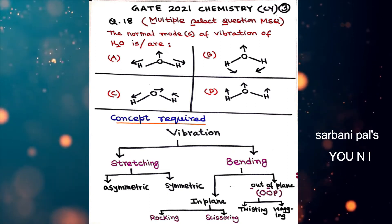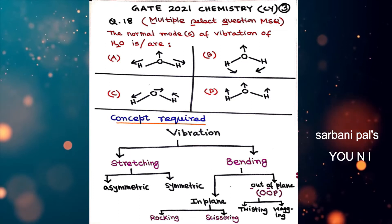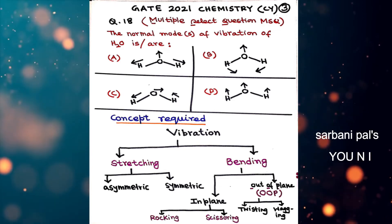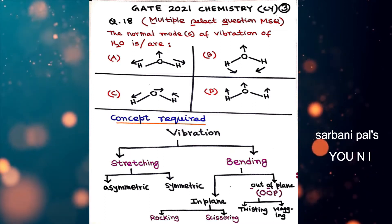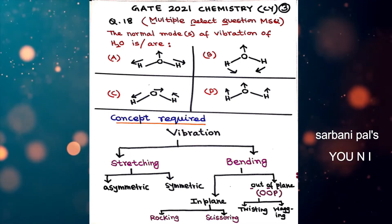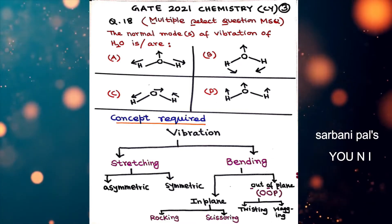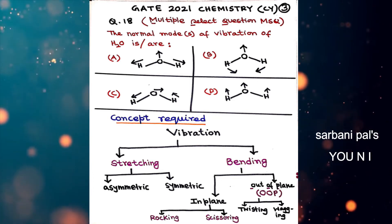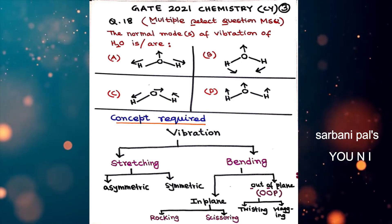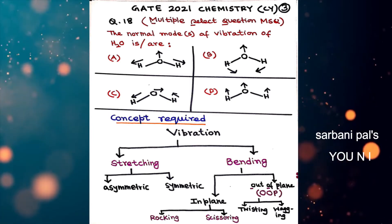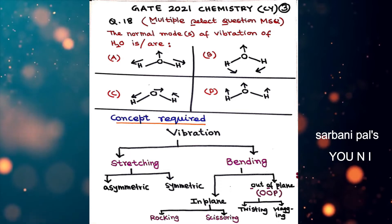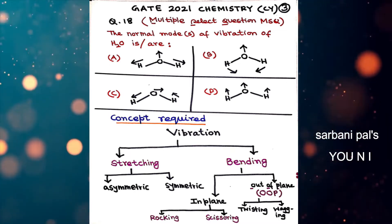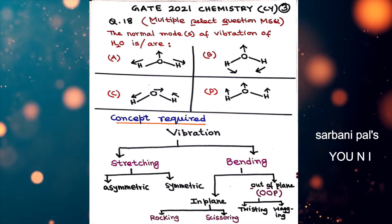IR deals with the change in vibrations of the molecule — IR interacts with light for vibrational excitation. Vibrations are of two types: stretching and bending. Stretching is related to the change in bond length, whereas bending is related to the change in bond angle keeping bond length constant. There are two types of stretchings — asymmetric (anti-symmetric) stretching and symmetric stretching — and two types of bendings: in-plane bending and out-of-plane (OOP) bending.